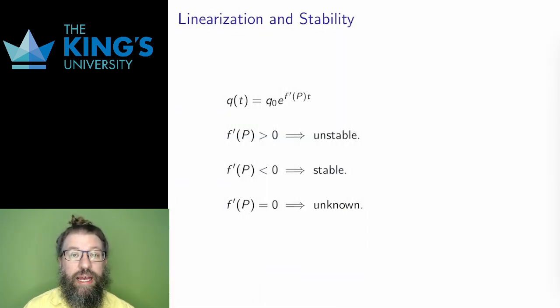Alright. So this is where we are. After changing from P to Q by just shifting the function, again, no other behavior changes from the function P to the function Q. The best linear equation solution to the equation is an exponential. Let me interpret this. It all depends on this derivative F prime of capital P. The derivative of the right side of the original DE, evaluated at the steady state.